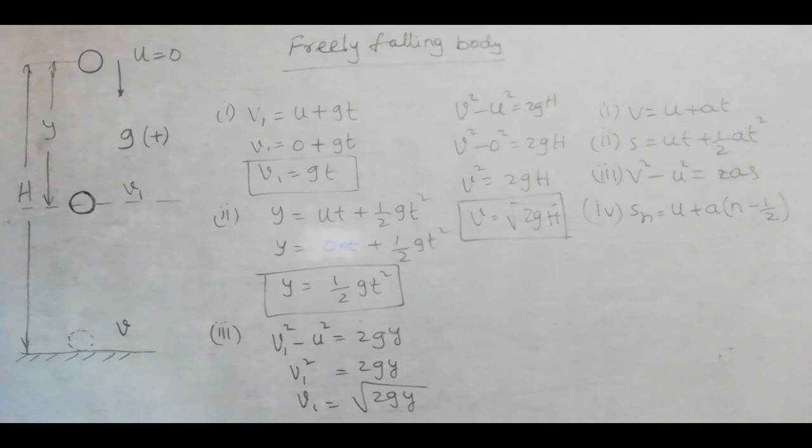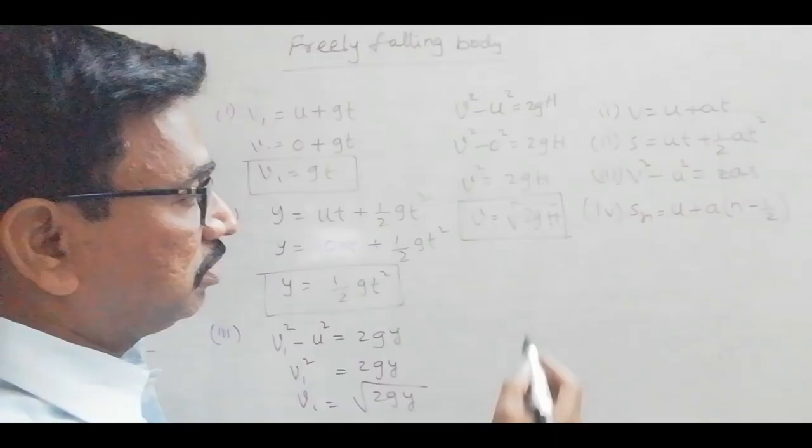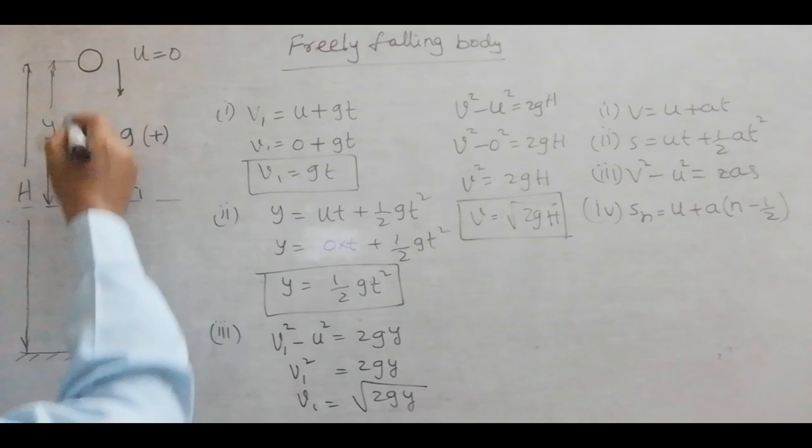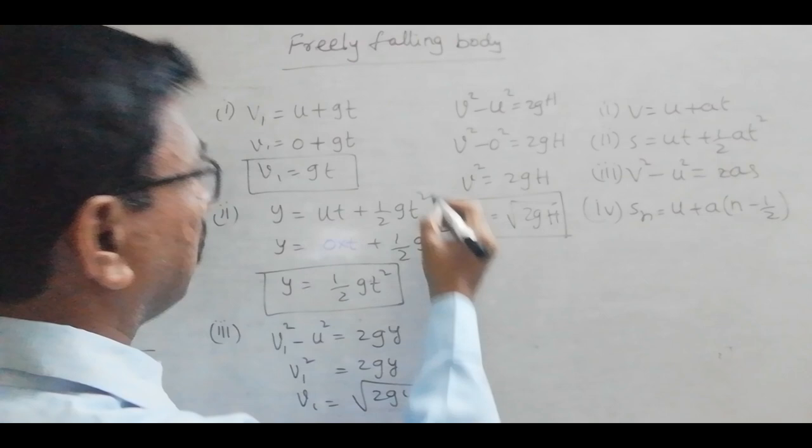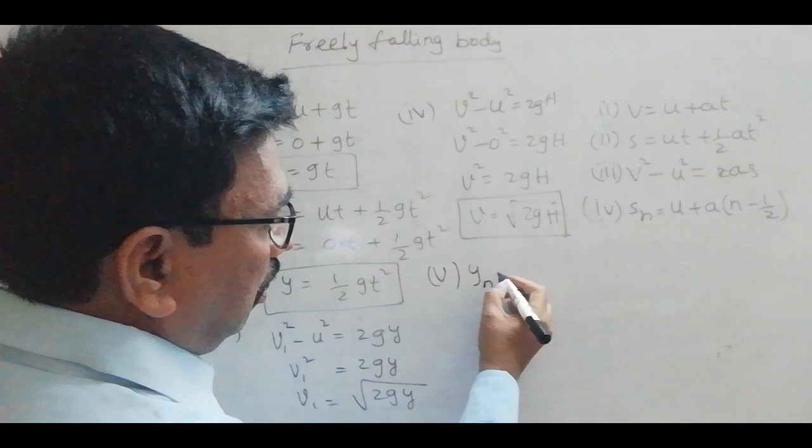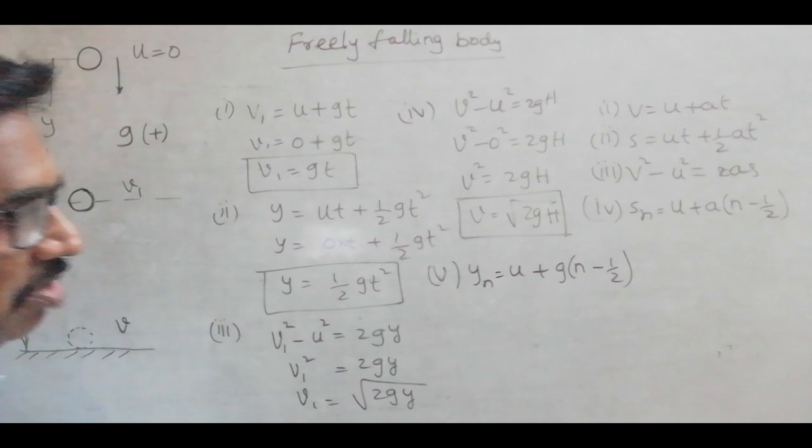Now we have the other relation: the displacement in the nth second. So we can take Yn equal to U plus G into N minus 1 by 2, where instead of A we are taking G.